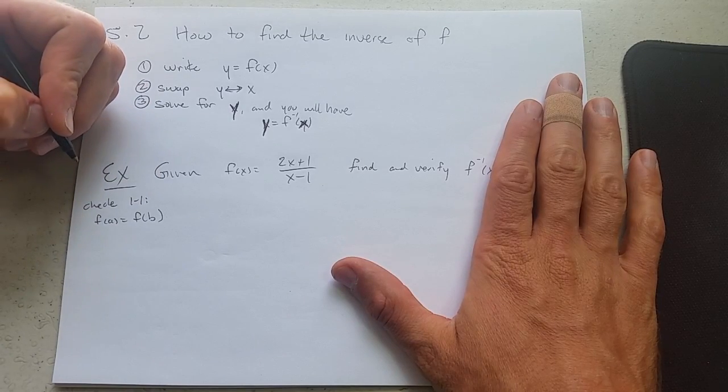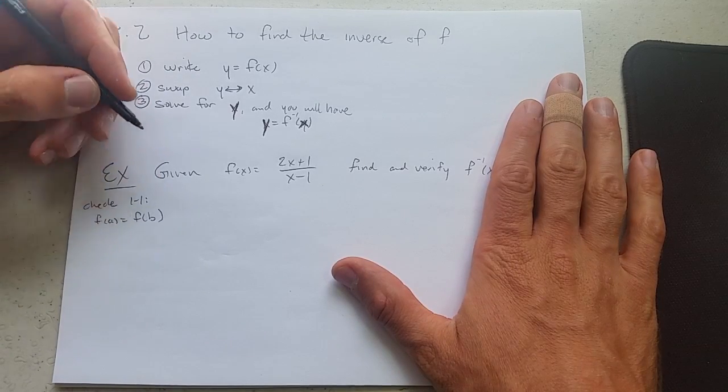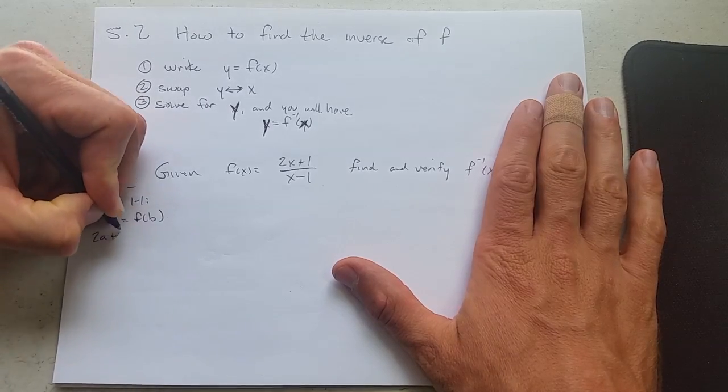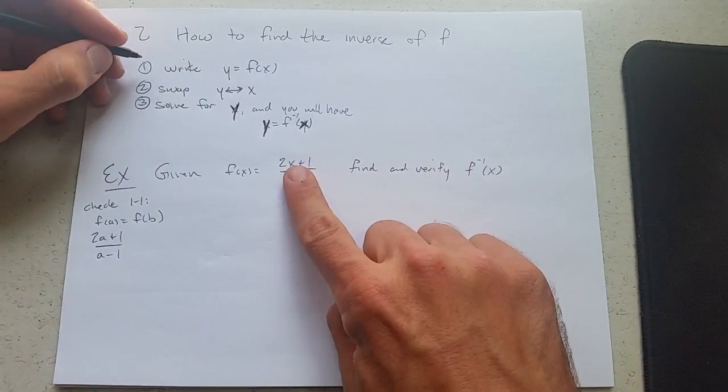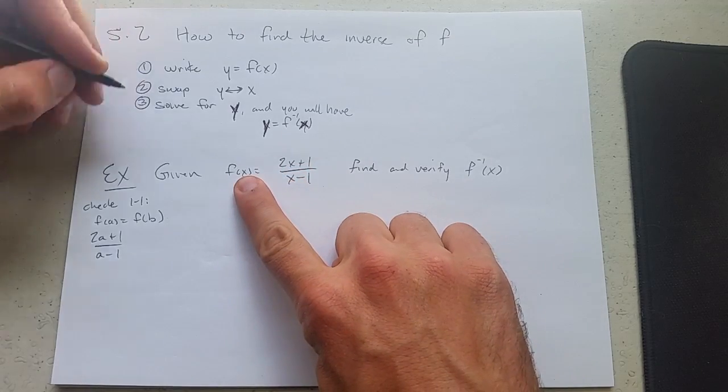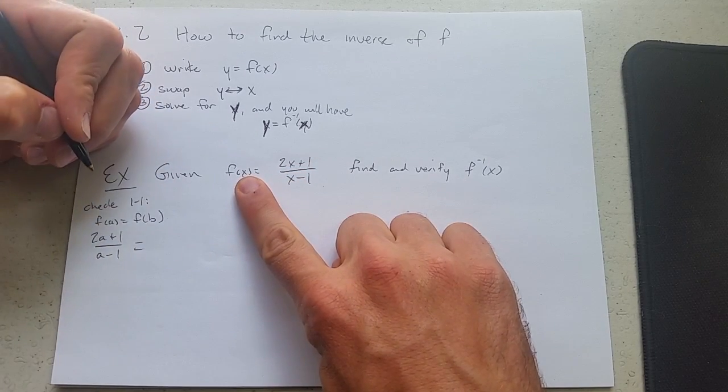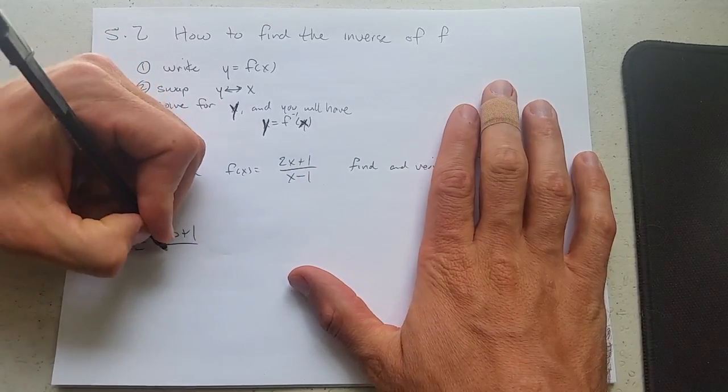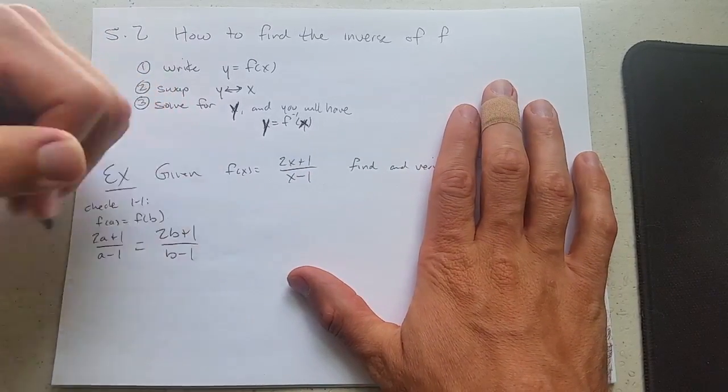This algebra is going to be a little more tricky than the algebra we just tried. So if f of a equals f of b, 2a plus one over a minus one, I just put a in wherever I saw x equals f of b, 2b plus one over b minus one.